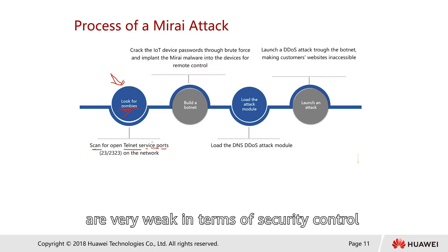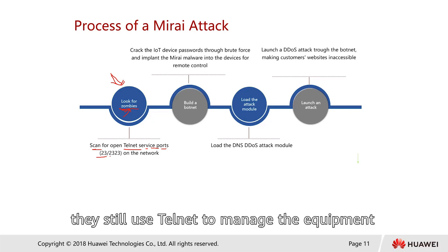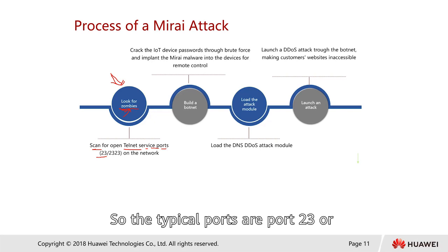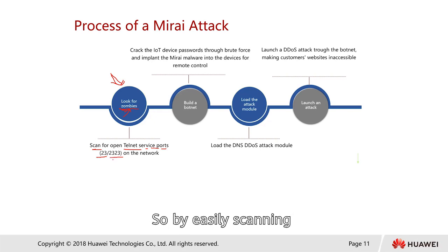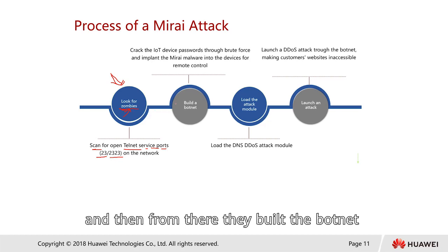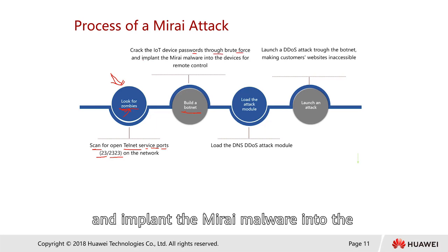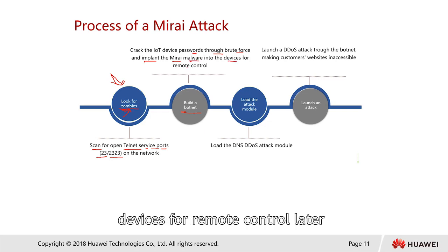The attacker starts by looking for open Telnet service ports. Most IoT devices are very weak in security control and sometimes still use Telnet to manage the equipment. The typical ports are port 23 or port 2323. By scanning devices joining the Wi-Fi network, attackers build the botnet.